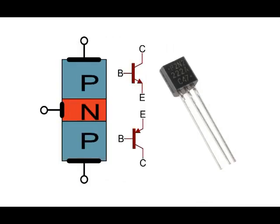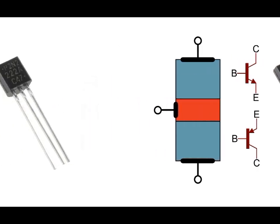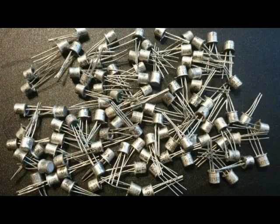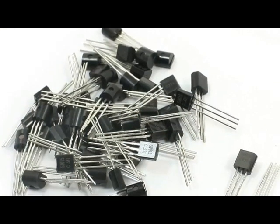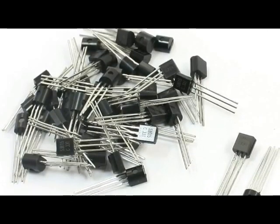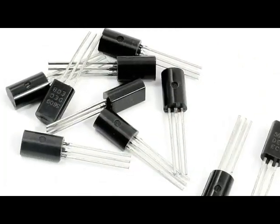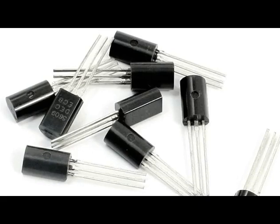According to the type of connection and the placement of their layers, BJTs are made in two types: PNP and NPN. PNP is a type of transistor in which an N semiconductor layer is placed between two P semiconductor layers. When a P semiconductor layer is placed between two N semiconductor layers, an NPN transistor is made. The NPN type is one of the most widely used transistors.